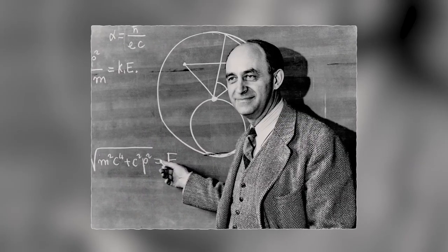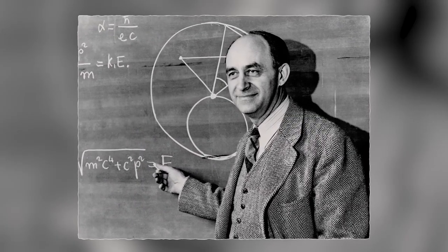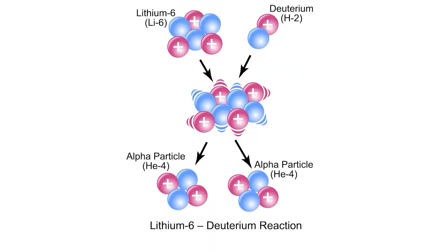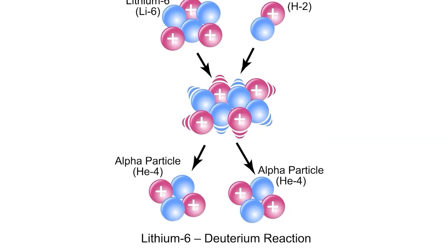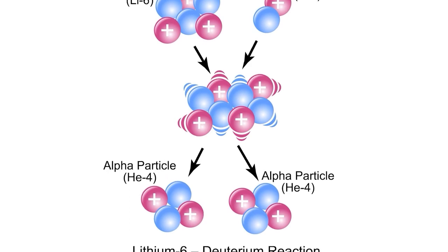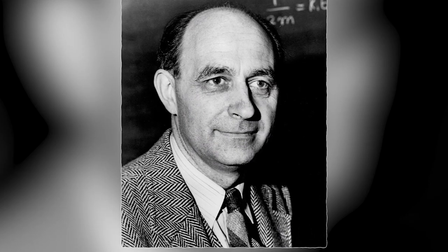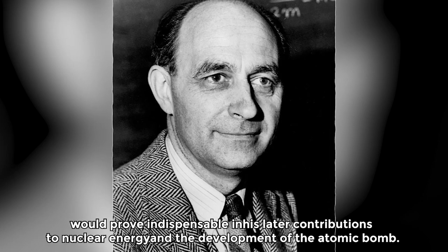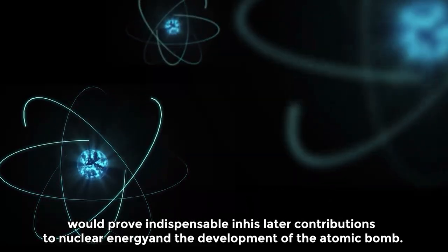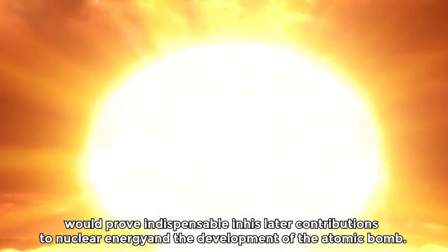Fermi's discovery of the effectiveness of slow neutrons in inducing nuclear reactions was a critical development in the understanding of nuclear processes and laid the groundwork for his subsequent work on nuclear chain reactions. His analytical approach and problem-solving skills would prove indispensable in his later contributions to nuclear energy and the development of the atomic bomb.